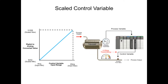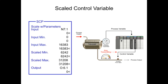The analog output module converts the digital value in the range of 6,242 to 31,208 to an analog signal of 4 to 20 milliamps. The analog signal is then sent to the flow valve where the operating range is adjusted between 0 and 100%.